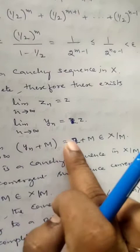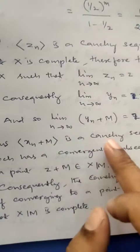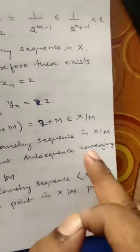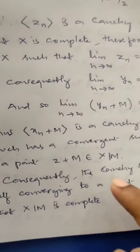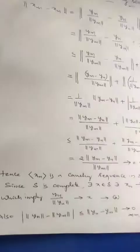Thus the Cauchy sequence x_n plus M in X/M has a convergent subsequence converging to z plus M in X/M. Therefore the Cauchy sequence itself converges to a point in X/M, meaning X/M is complete, or X/M is a Banach space. We have proved that if X is complete, then the quotient space X/M is also complete.